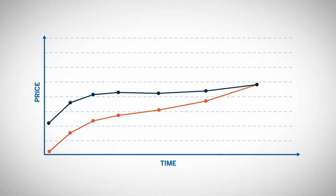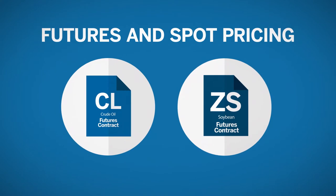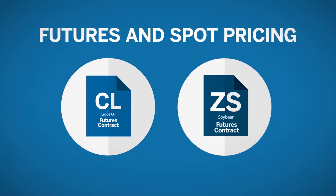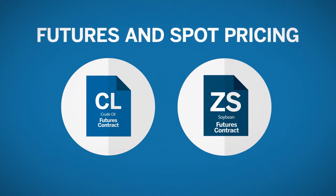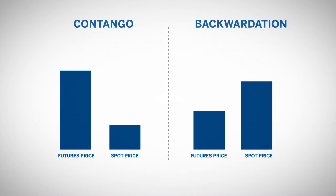Another unique variable in the pricing of futures contracts is the fact that they are pricing a market at a certain time in the future. Futures prices and spot prices will converge and diverge over time, and there are natural relationships to the spot price that form in the futures markets. For example, the crude oil futures contract has a different relationship to its spot price than soybeans do. The fundamental analyst will determine if the relationship between spot and futures prices is in its normal relation or not, as this will have an impact on how prices will move in the future.